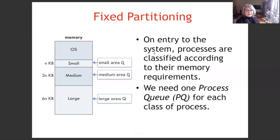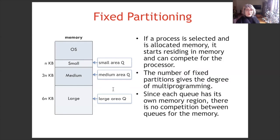On entry to the system, processes are classified according to their memory requirements. We need one process queue for each class of processes — a queue for the small area, another for the medium area, and also for the large area. If a process is selected and allocated memory, it starts residing in memory and can compete for the processor. The number of fixed partitions gives the degree of multiprogramming. Since each queue has its own memory region, there is no competition between queues for the memory.